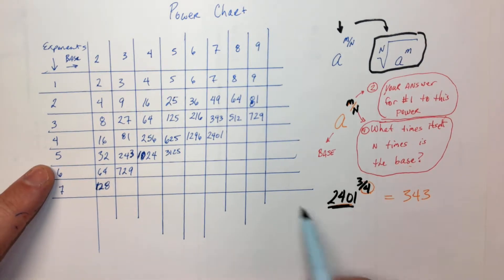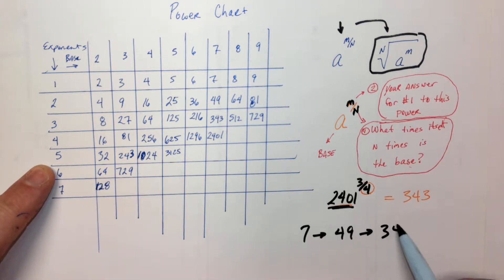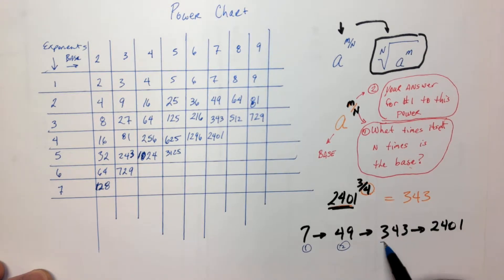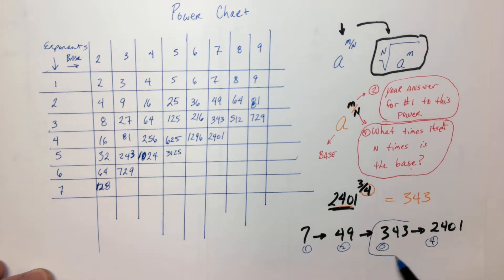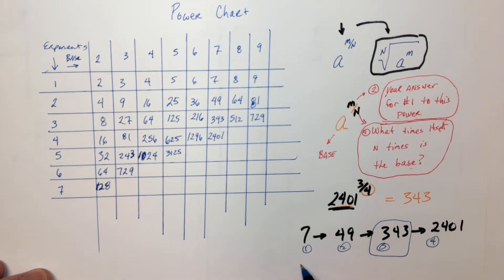Here's how it works. This one goes 7, and then the next step is 49, and the next step is 343, and then we arrive at 2401. So this is step 1, step 2, step 3, step 4. That's our answer right there — it's the 3rd out of 4 steps to get to that with repeated multiplication, and this is by 7 every time. So that's 7, this is 7 times 7.